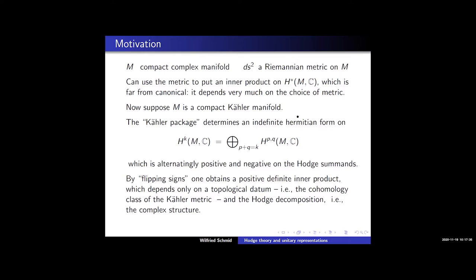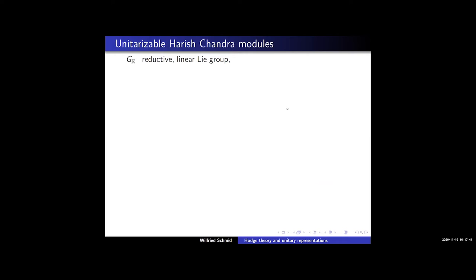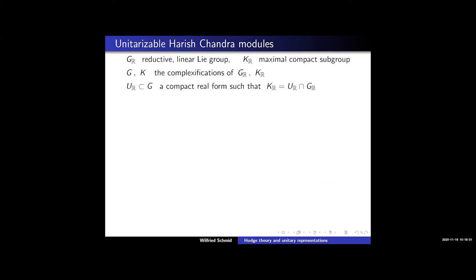Now let me describe the problem I am concerned with. Suppose G_R is a reductive linear Lie group, K_R a maximal compact subgroup, and then G, K without the subscript R, the complexifications of those two groups. Then one can choose a compact real form of the complex group which intersects the real group and the maximal compact subgroup, and that choice is unique.